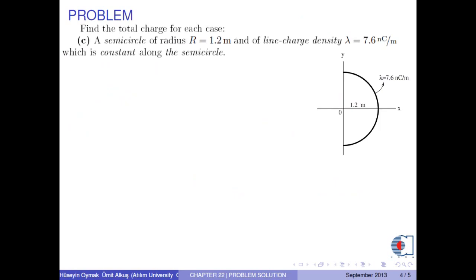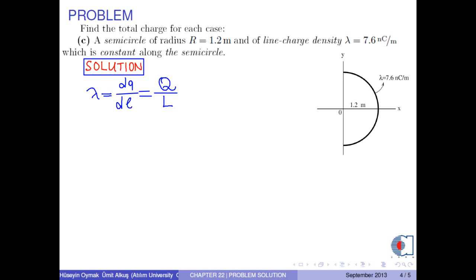C: Find the total charge of a semicircle of radius r equals 1.2 meters and of line charge density lambda equals 7.6 nanocoulombs per meter, which is constant along the semicircle. The line charge density has the formula dq over dl. Since lambda is constant along the semicircle, we can write total charge over total length, where l is the length of the semicircle. From which, we obtain total charge as lambda times l.